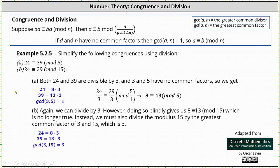Again, the first step, which we already know, is to determine the greatest common factor of 24 and 39, which is 3. But now we need to determine the greatest common divisor or greatest common factor of the common factor of 3, and the modulus of 15. And the greatest common divisor of 3 and 15 is 3.